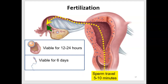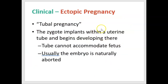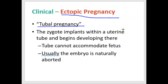Sometimes movement of the fertilized egg doesn't happen, and the embryo or fertilized egg embeds in the wall of the uterine tube. This is referred to as an ectopic pregnancy, also called a tubal pregnancy. The fertilized egg — a zygote — implants there and begins developing, but the tube will not expand to accommodate a developing fetus like the uterus can. There is also no highly vascular, nutrient-rich source of carbohydrates as in the uterus. The embryo is usually naturally aborted, sometimes called a spontaneous abortion.